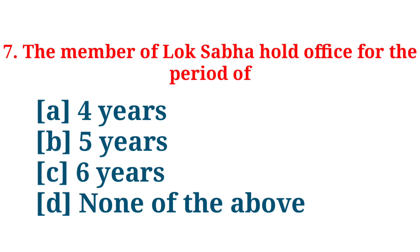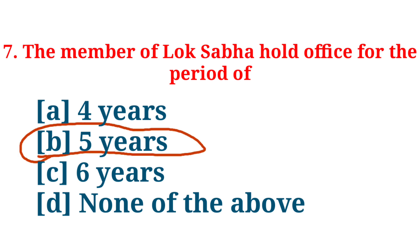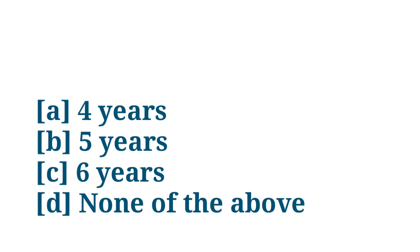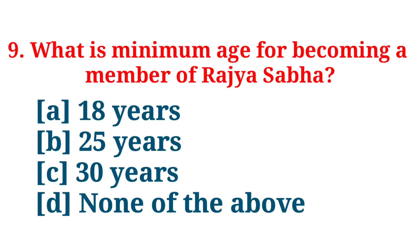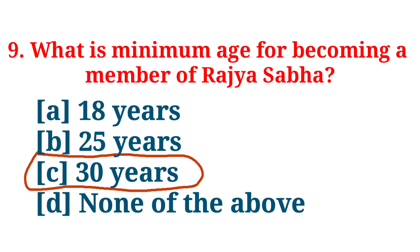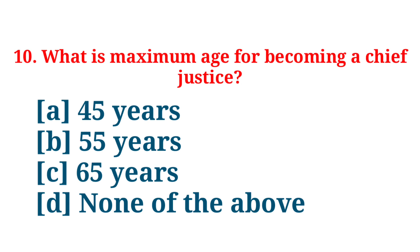The members of Lok Sabha hold office for a period of answer five years. The members of Rajya Sabha are elected for a term of answer six years. What is the minimum age for becoming a member of Rajya Sabha? Answer: 30 years.